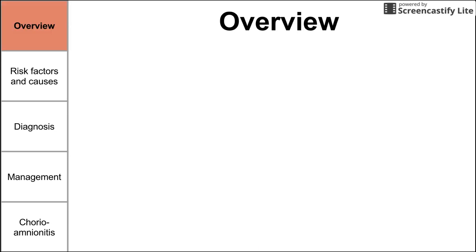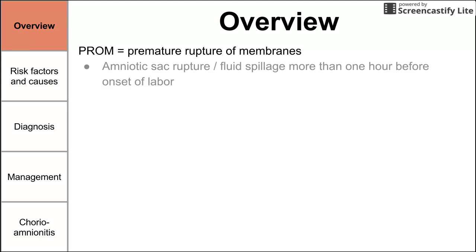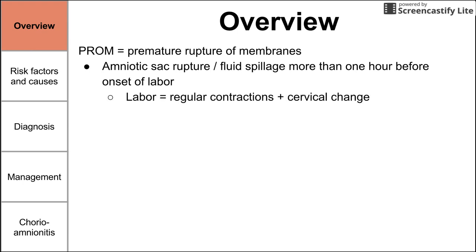There are a few acronyms worth keeping straight. PROM — premature rupture of membranes — is defined as a rupture of the amniotic sac with fluid spillage more than one hour before the onset of labor. Labor is defined as regular contractions and cervical changes. When the sac ruptures more than one hour before that definition of labor, you have PROM.